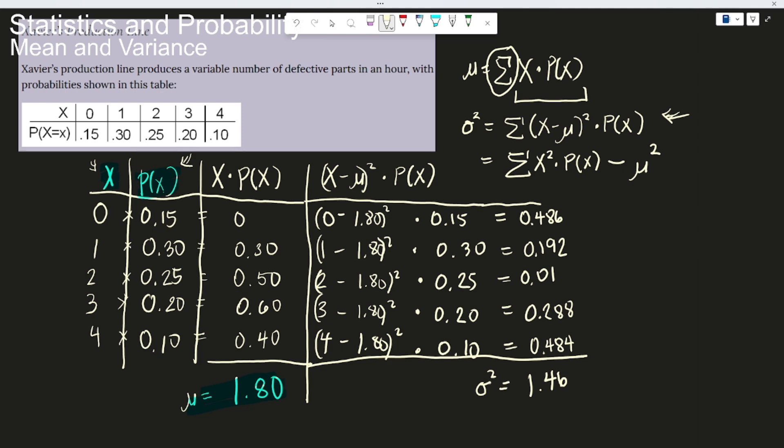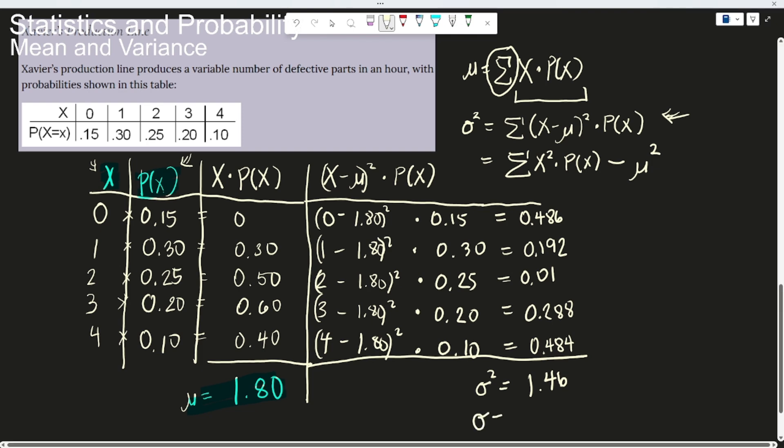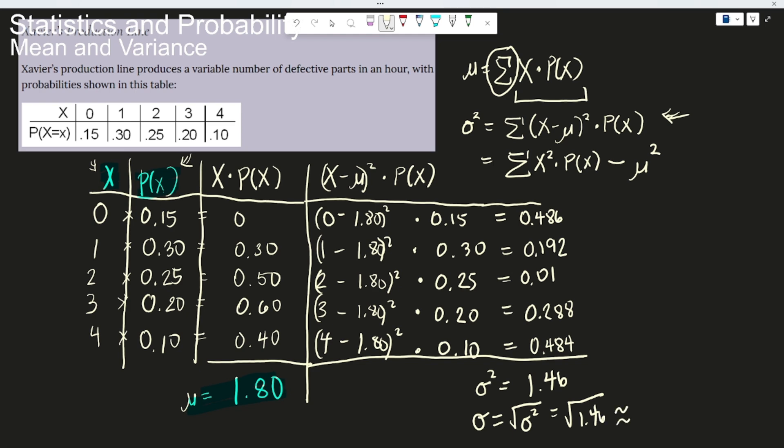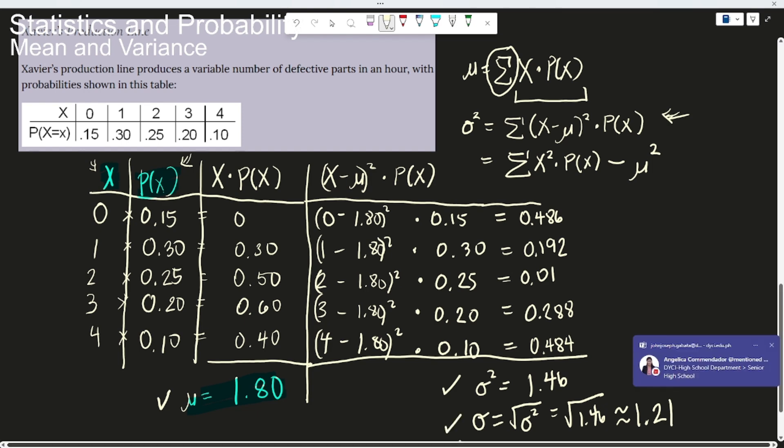And to get the standard deviation, we just need to get the square root of the variance. So that's the sigma is equal to the square root of the sigma squared, which is the square root of 1.46. And we get that it's approximately 1.21. So this is your standard deviation. So you have the mean here, the variance here, and the standard deviation here. Okay? Apologies for the notifications. But thank you for listening.